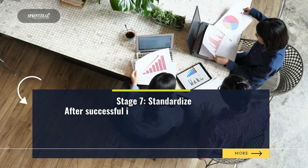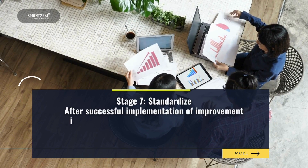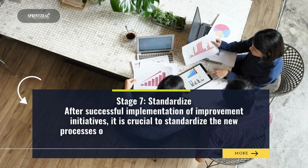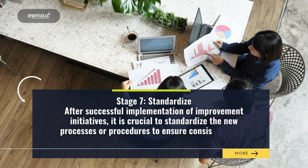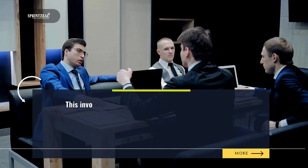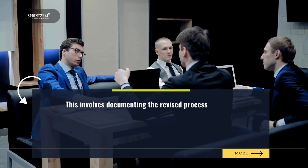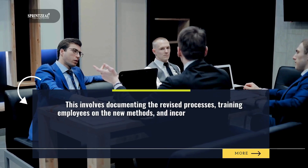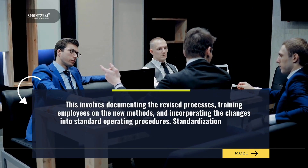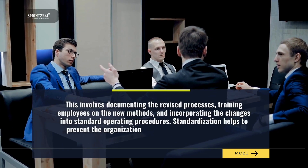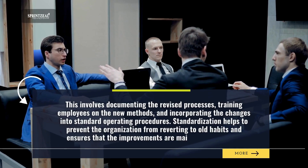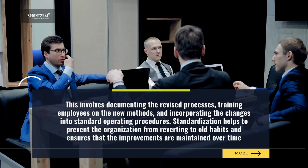Stage 7: Standardize. After successful implementation of improvement initiatives, it is crucial to standardize the new processes or procedures to ensure consistency and sustainability. This involves documenting the revised processes, training employees on the new methods, and incorporating the changes into standard operating procedures. Standardization helps to prevent the organization from reverting to old habits and ensures that the improvements are maintained over time.